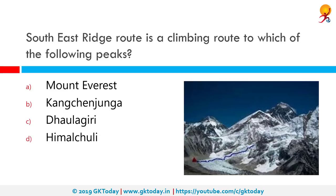Southeast Ridge, also known as the Southeast Col route, is a climbing route to which peak? It is a climbing route to Mount Everest. Everest is the tallest mountain in the world at about 8,848 meters above sea level, sitting directly on the border of Tibet and Nepal. There are two commonly climbed routes up the mountain: the South Col route and the Northeast Ridge.